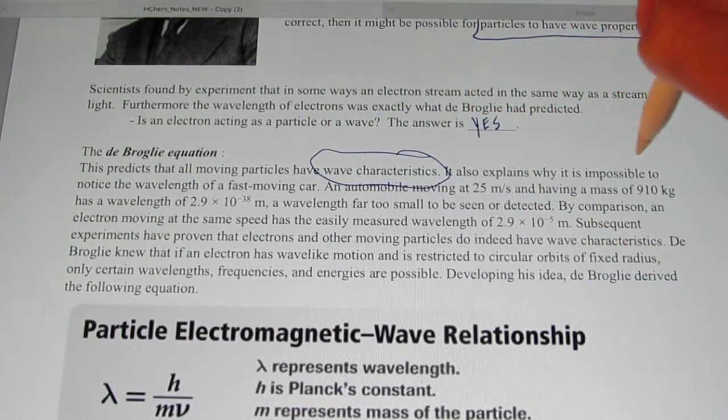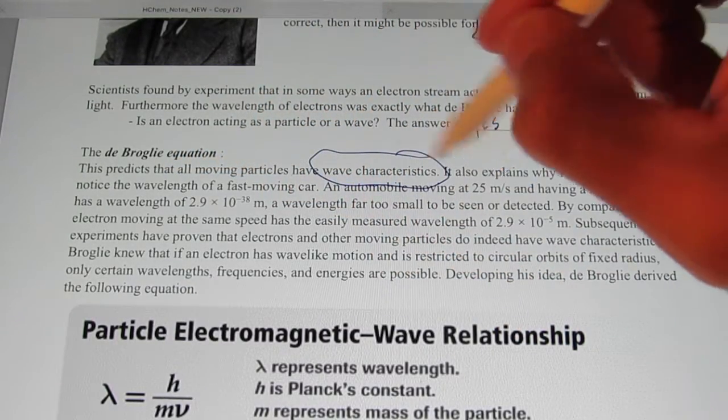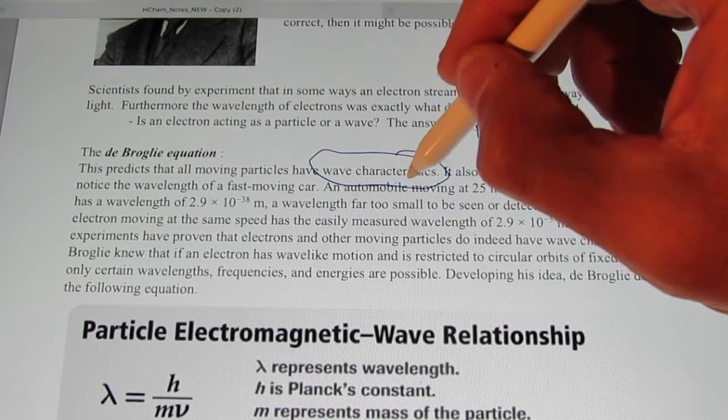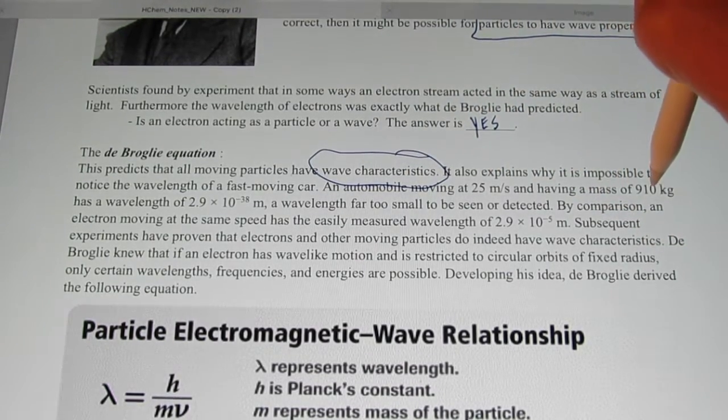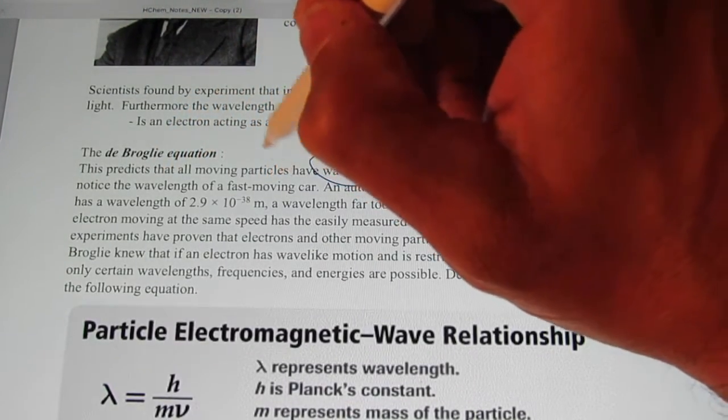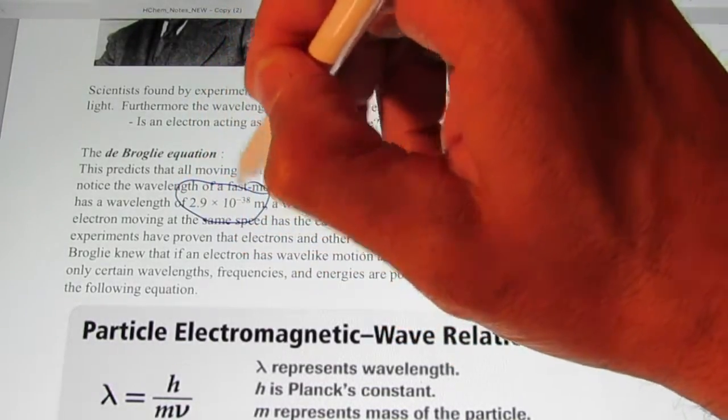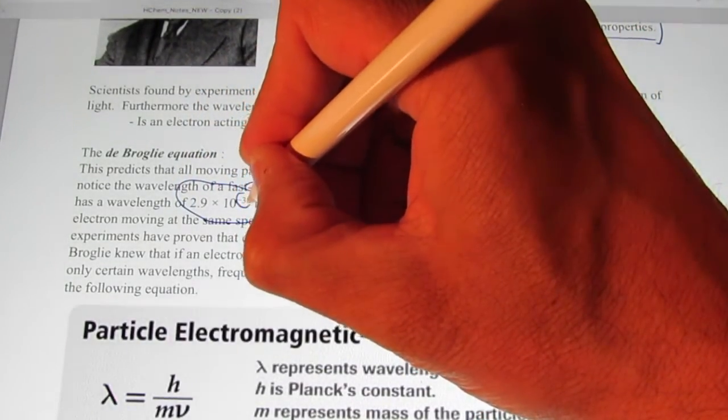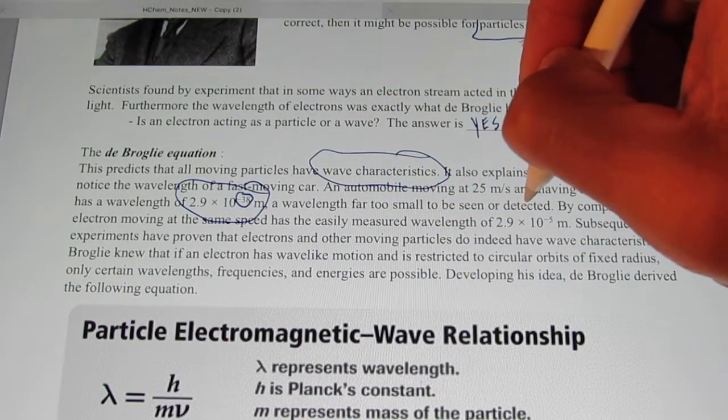It also explains why it's impossible to notice the wavelength of a fast-moving car. Think about this. An automobile moving at 25 meters per second, having a mass of 900 kilograms, almost 1,000 kilograms, has a wavelength, according to the de Broglie equation, of 2.9 times 10 to the negative 38th meters. A wavelength far too small to be seen or even detected.